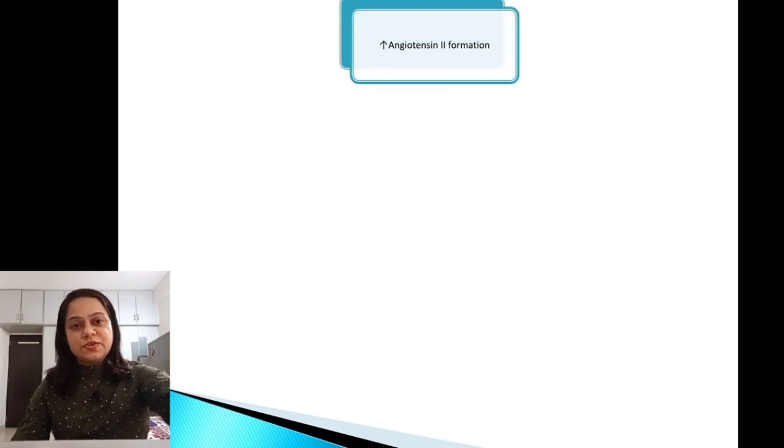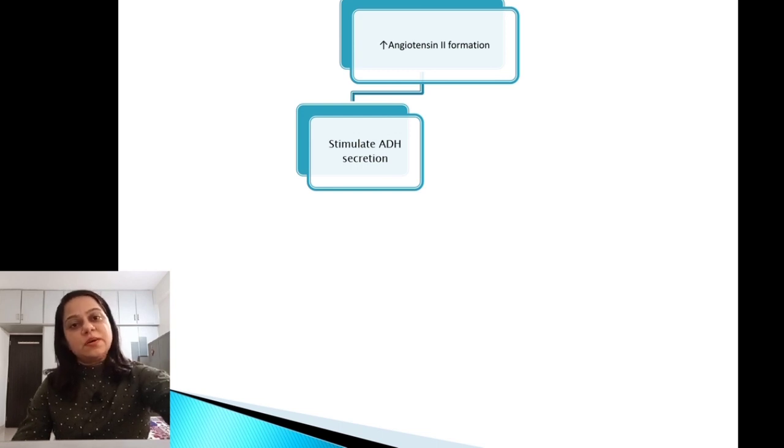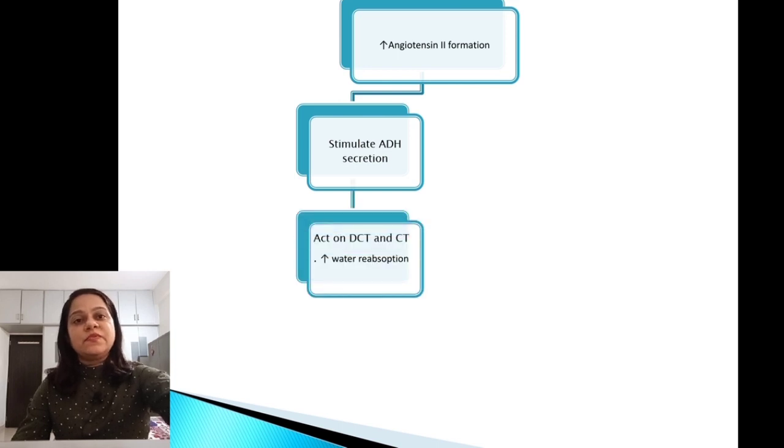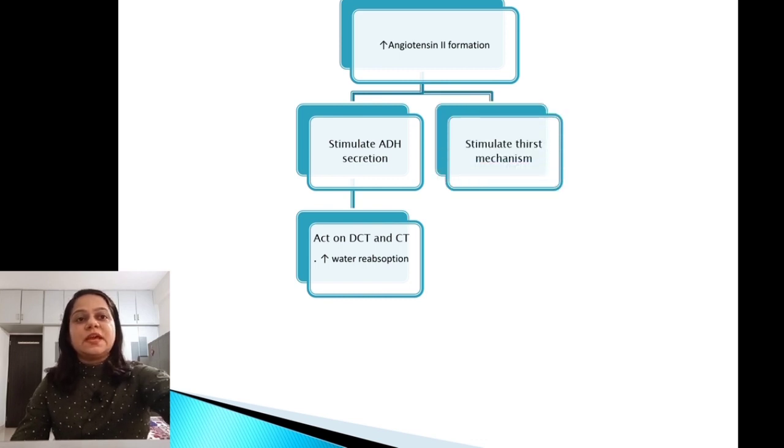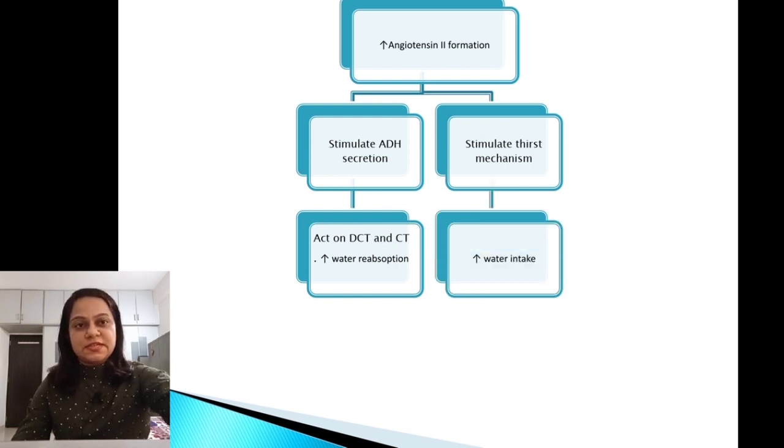Increase in angiotensin 2 formation causes stimulation of anti-diuretic hormone from the posterior pituitary, which acts on distal convoluted tubules and collecting tubules, thus increasing water reabsorption. It also causes stimulation of thirst mechanism, thus increasing water intake.